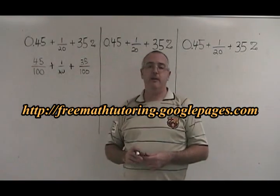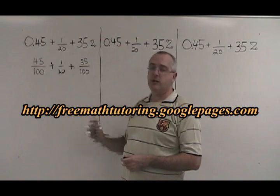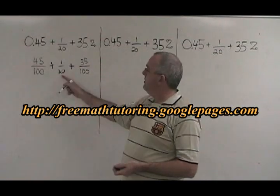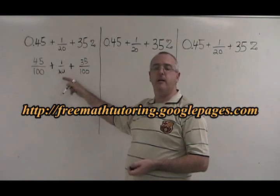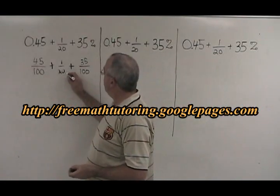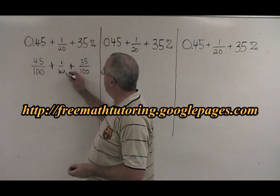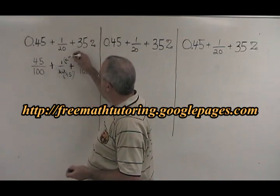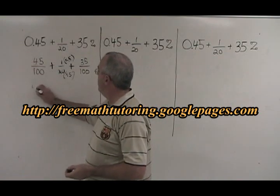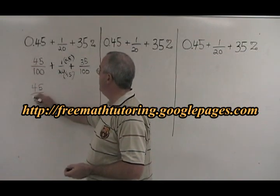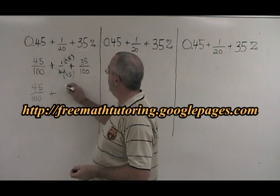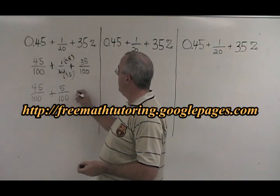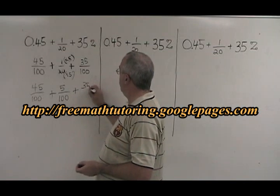But we want to have a common denominator because we're adding fractions now. Since two of them are already over 100, I choose to convert 1/20 so that it is over 100 as well. To turn that 20 into 100, you have to multiply it by 5, so we also have to multiply the 1 in the numerator by 5. We end up with 45 over 100, plus 1 times 5 is 5, over 20 times 5 is 100, plus 35 over 100.